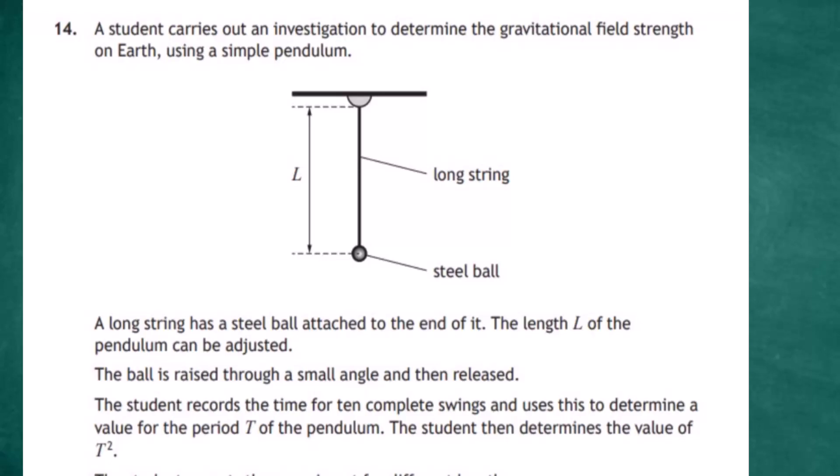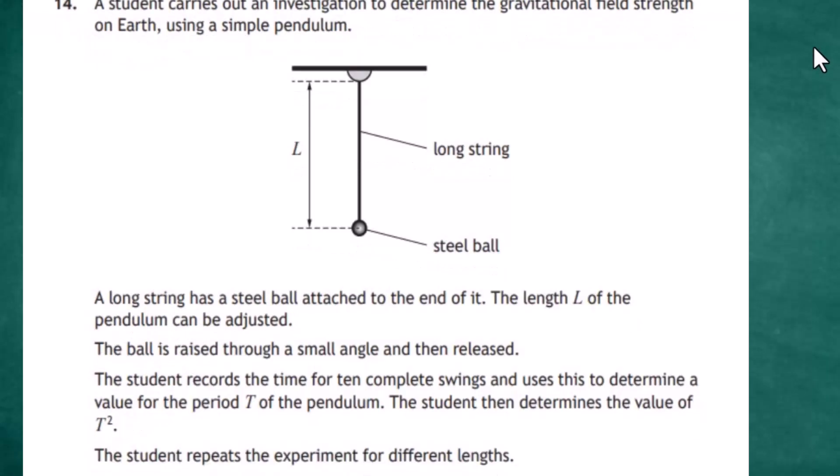A long string has a steel ball attached to the end, and the length L of the pendulum can be adjusted. The ball is raised through a small angle and released. The student records the time for 10 complete swings to determine the period T, and then calculates the value of T squared.